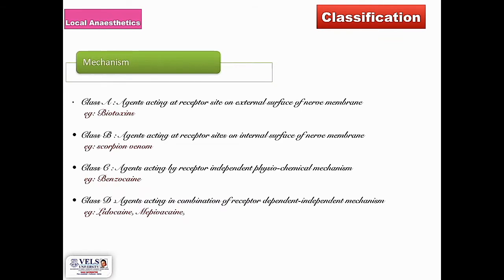Moving on to the mechanisms of action, they can be categorized into four classes. Class A: agents acting at the receptor site on the external surface of the nerve membrane — example, biotoxins. Class B: agents acting at the receptor site on the internal surface of the nerve membrane — example, scorpion venom. Class C: agents acting by receptor-independent physicochemical mechanism — example, benzocaine. Class D: agents acting by a combination of receptor-dependent and independent mechanisms — example, lidocaine and mepivacaine.